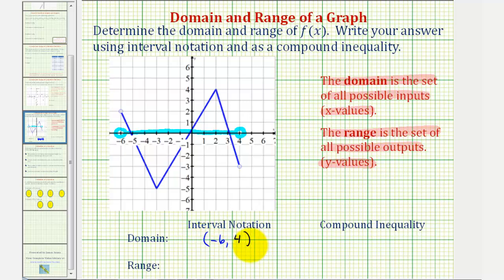Remember, these rounded parentheses indicate that the endpoints are not included. And as a compound inequality, we can say that x is greater than negative six, not greater than or equal to, because again it does not include negative six, and x is also less than four. So here's the domain using interval notation as well as using a compound inequality.